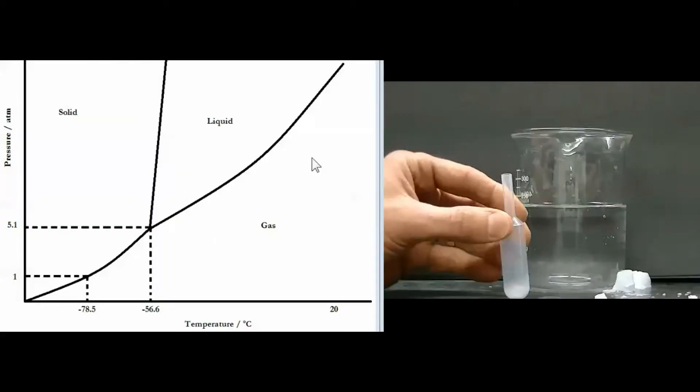Over here on the left we see a phase diagram for carbon dioxide. A phase diagram allows us to predict in what phase carbon dioxide will exist under different conditions of pressure and temperature.